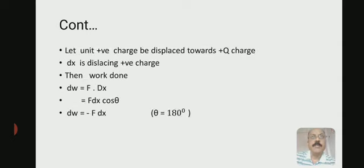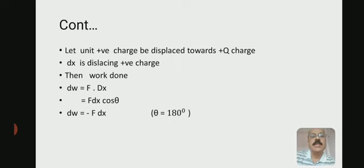Let a unit positive charge be displaced towards the plus Q charge by a small displacement dx. The work done dW is equal to force into displacement. You know that to move a point charge from one place to another, work has to be done: W = F × s. So here dW = F × dx × cosθ.